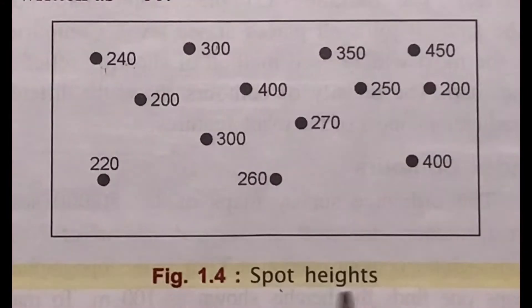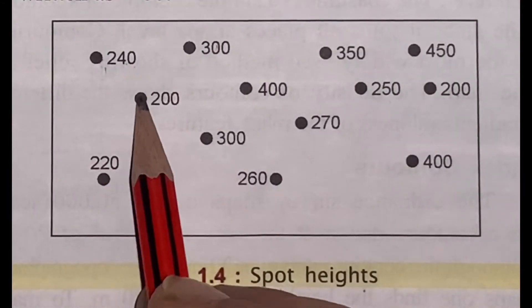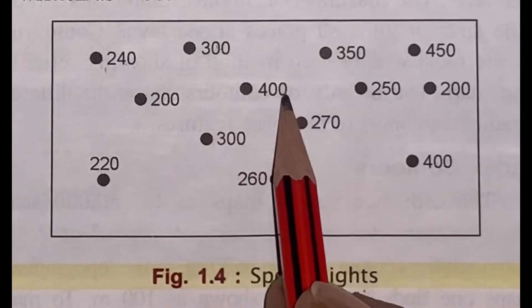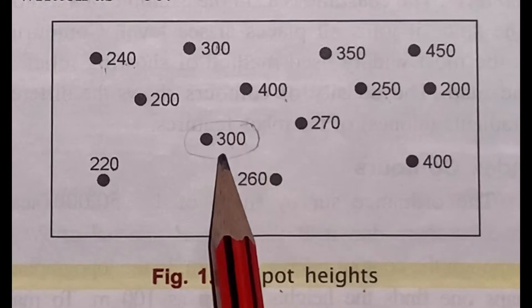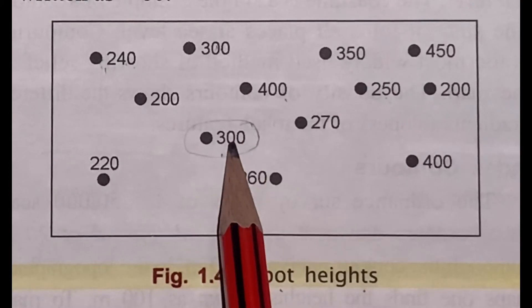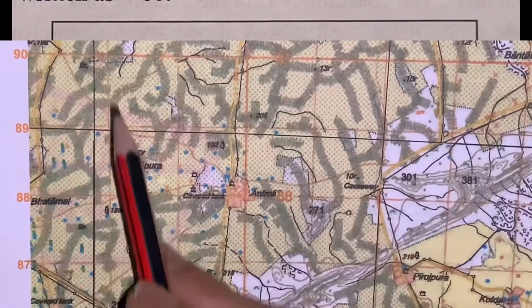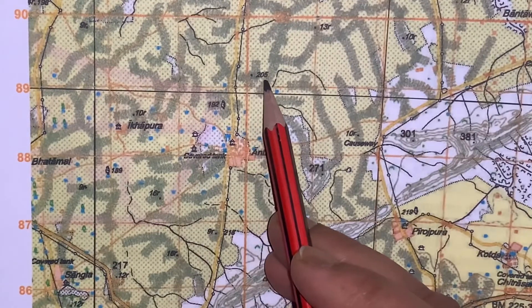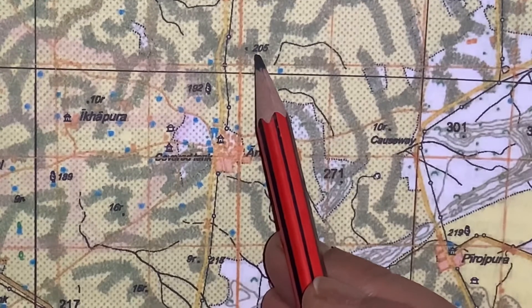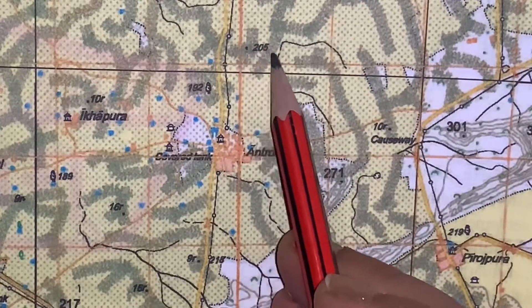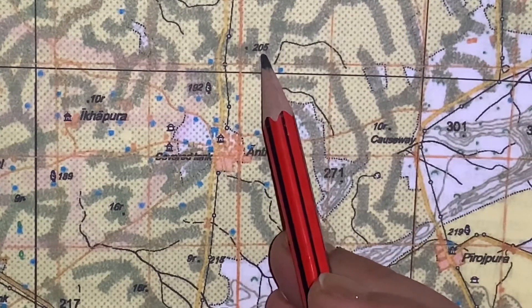Moving towards the fourth method — spot heights. Spot heights are dots with a number beside them. These numbers denote the height of that particular place above the mean sea level. For example, in this map it is written spot height 205, which means that the particular area is 205 meters above the mean sea level.